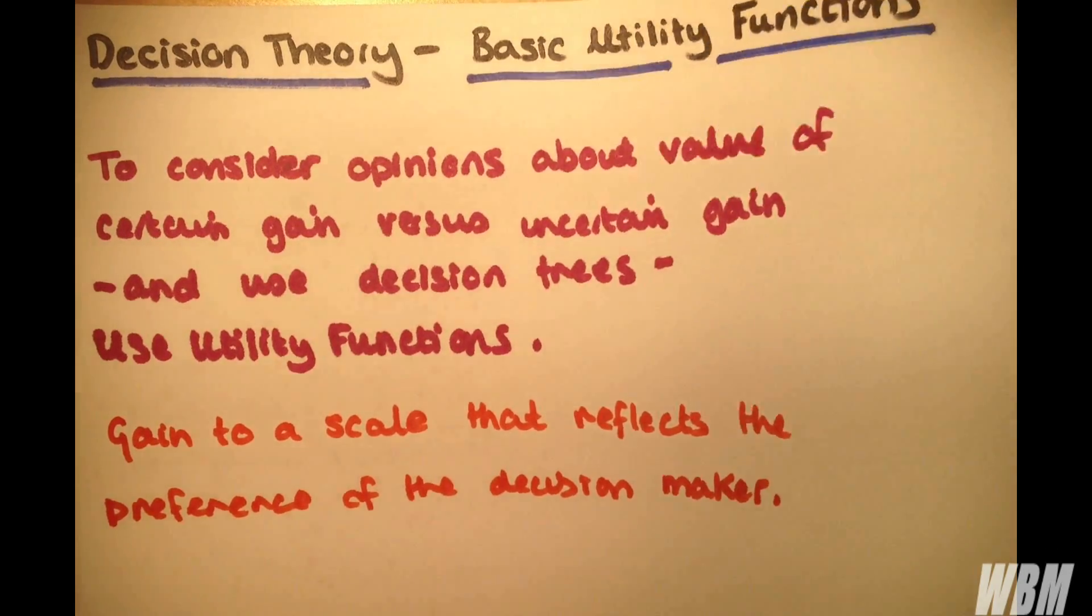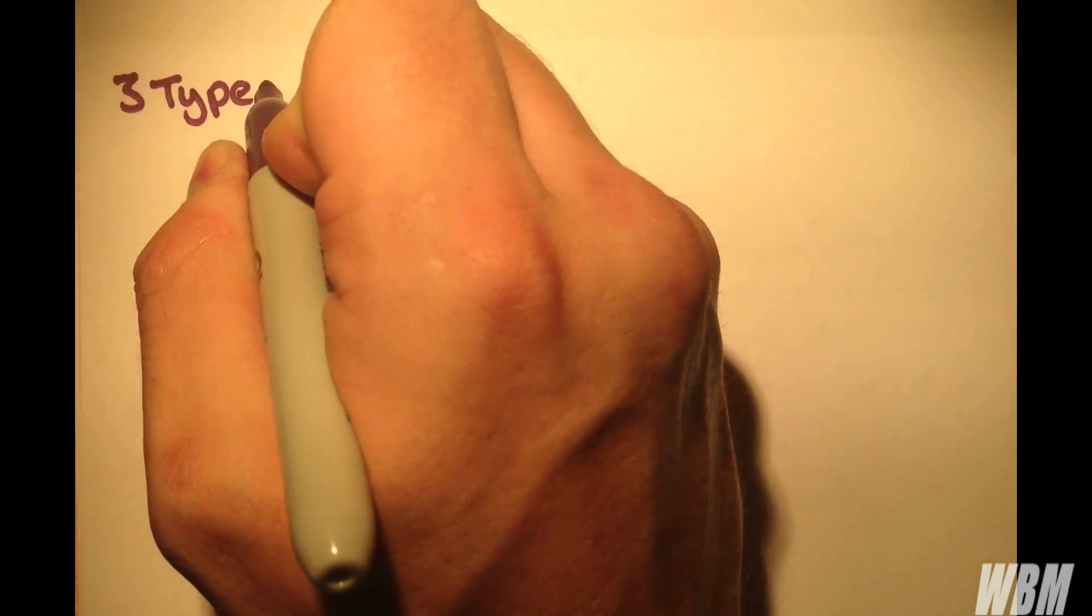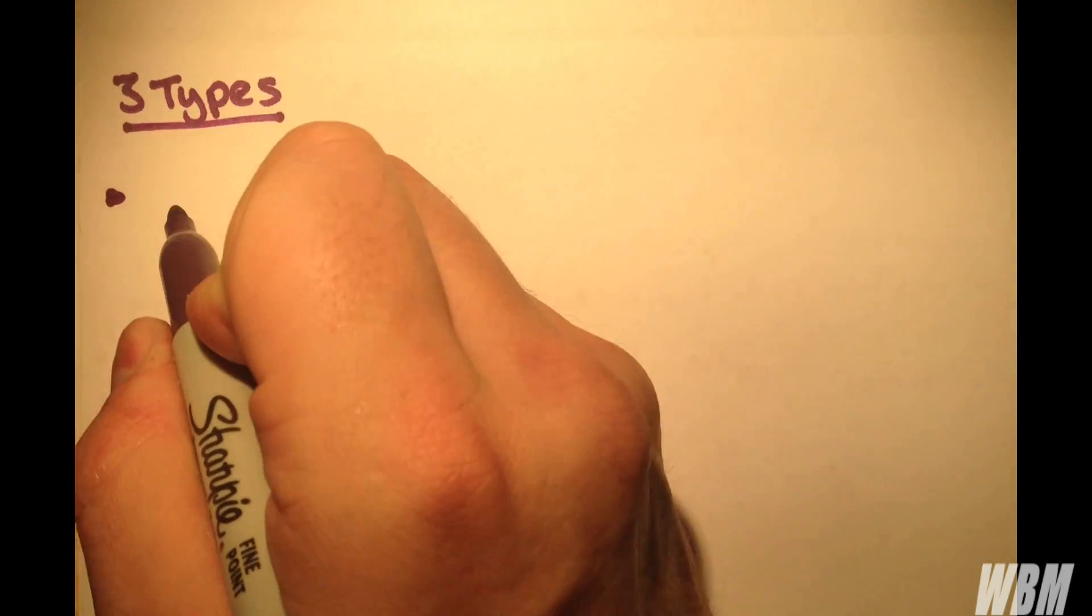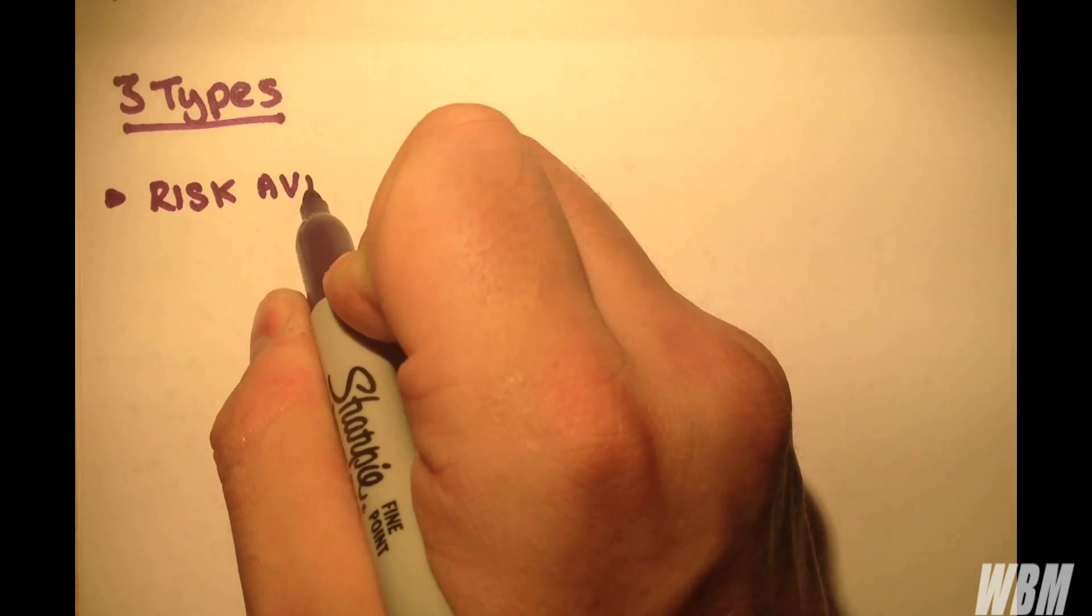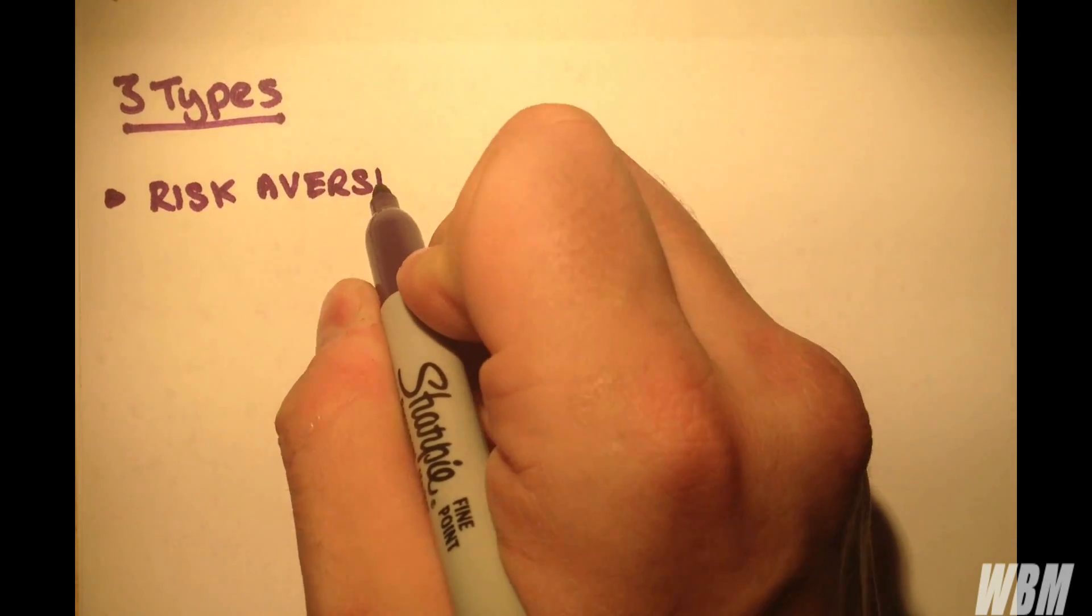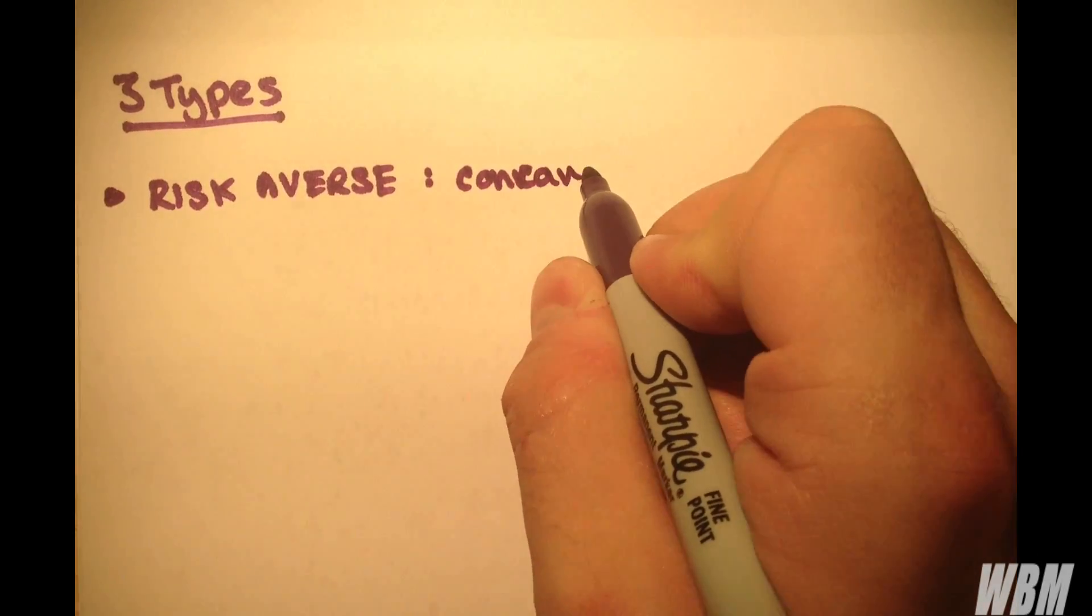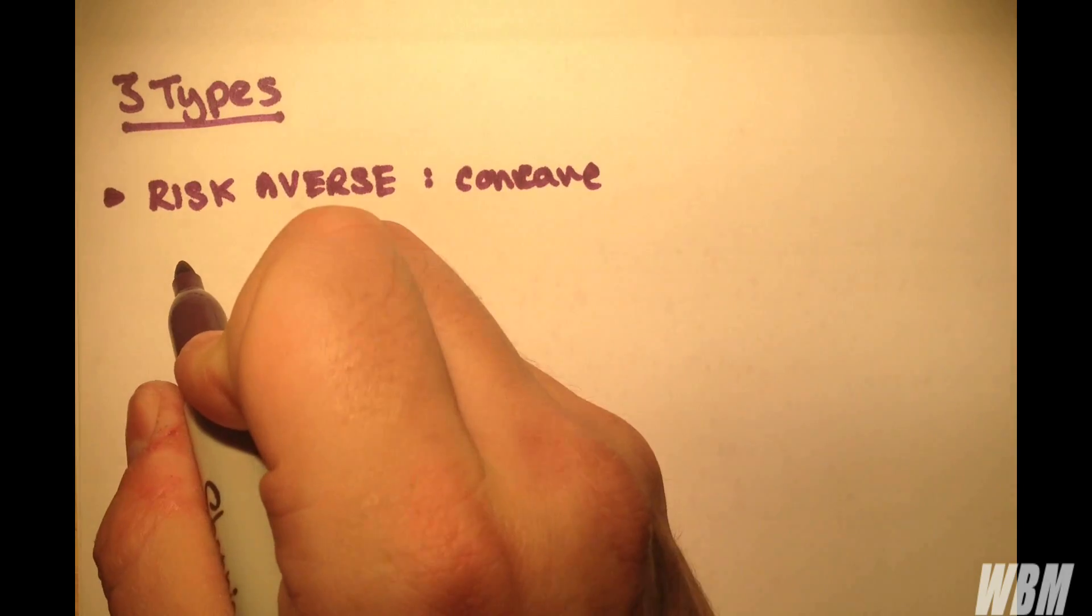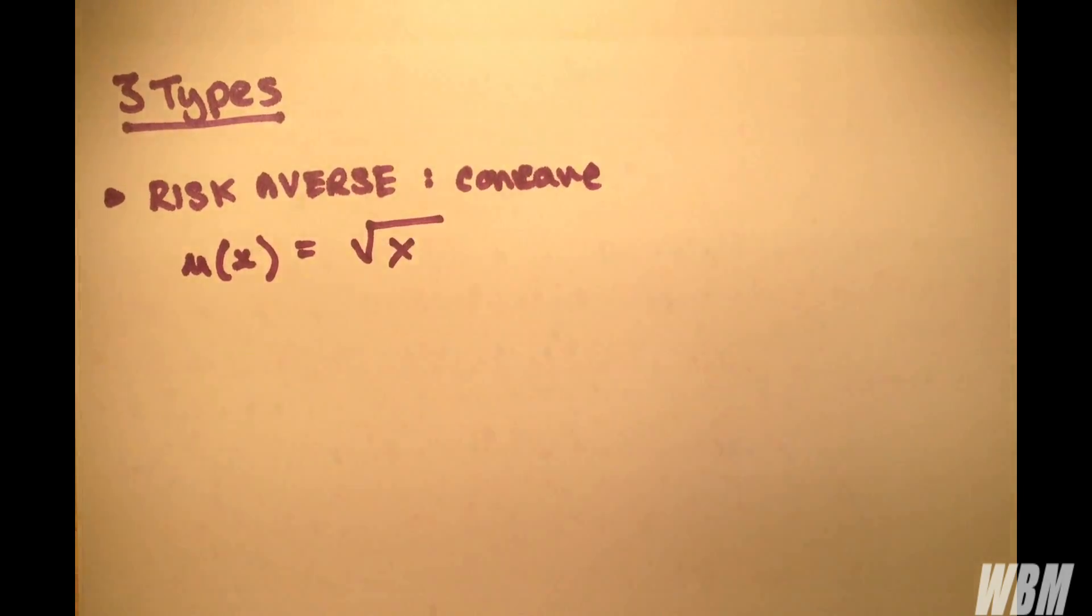We shall be considering three types of utility functions. The first one is risk-averse, so you are averse to risk. And these tend to be concave. An example of this would be utility function equal root of x, for example.